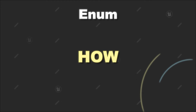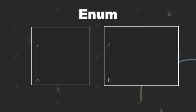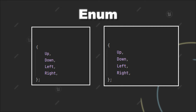But how can we define enums? There are two ways and we will check out both of them. In this example, we'll define an enum for representing possible directions: up, down, left, and right.